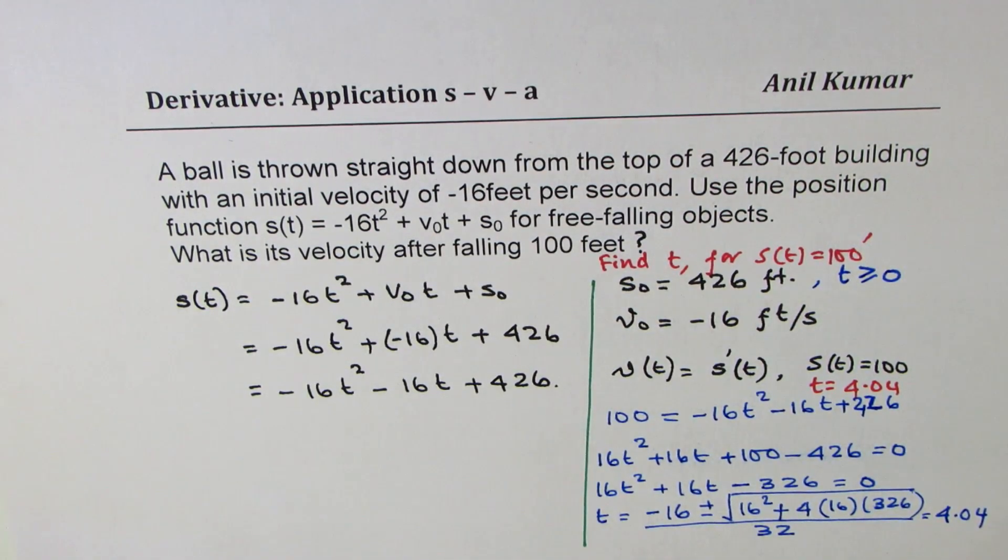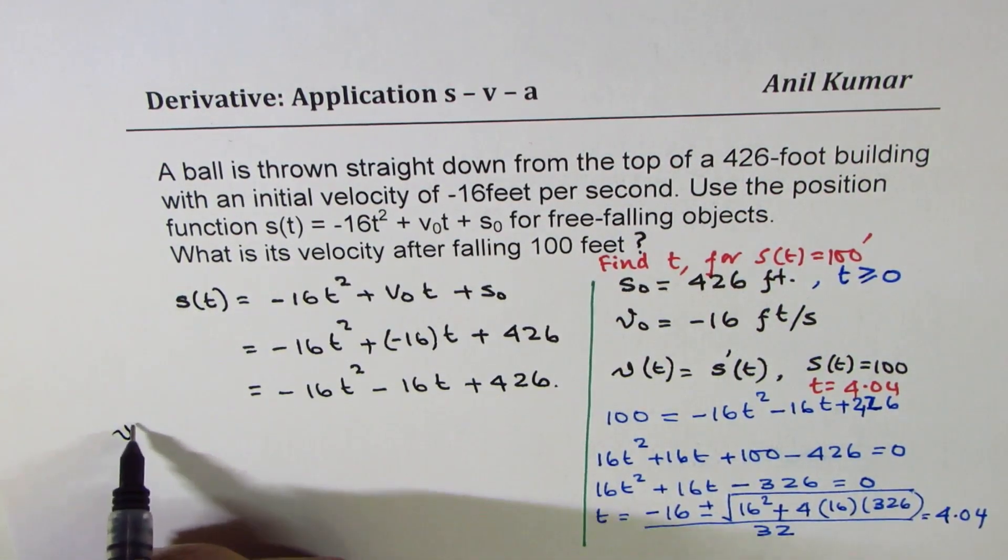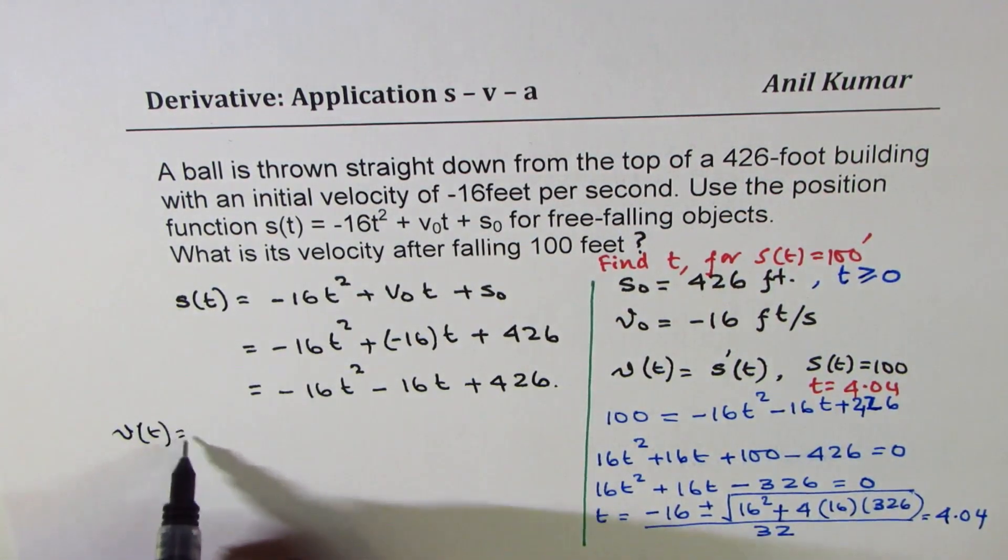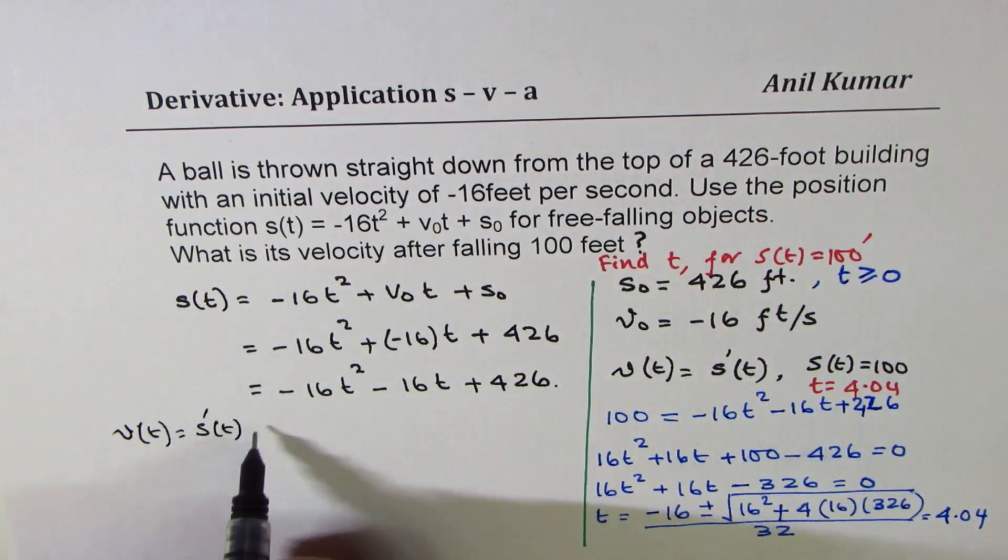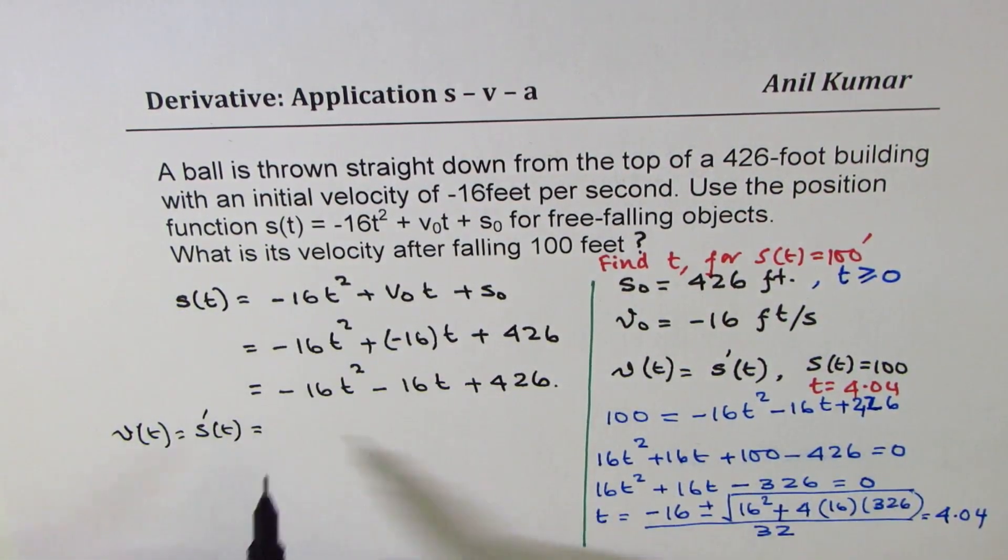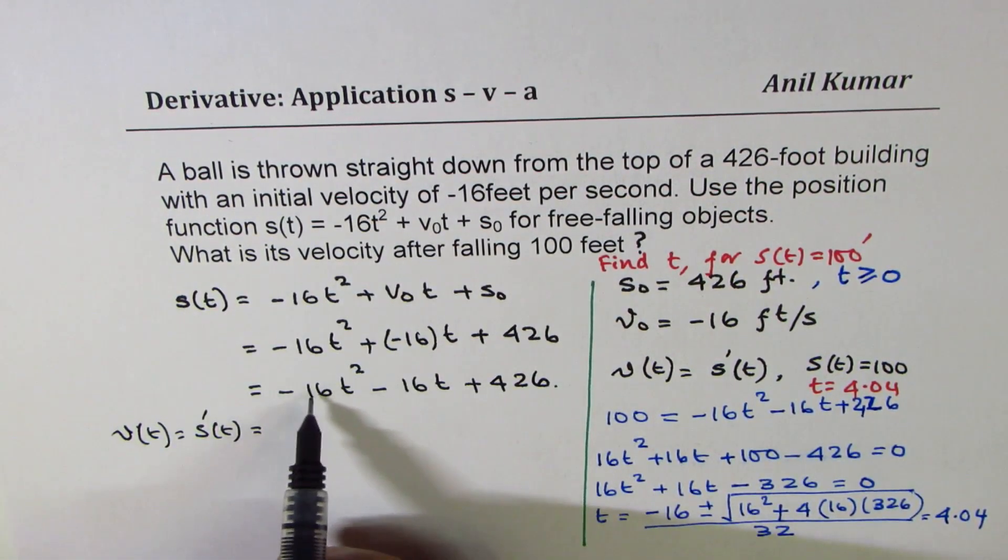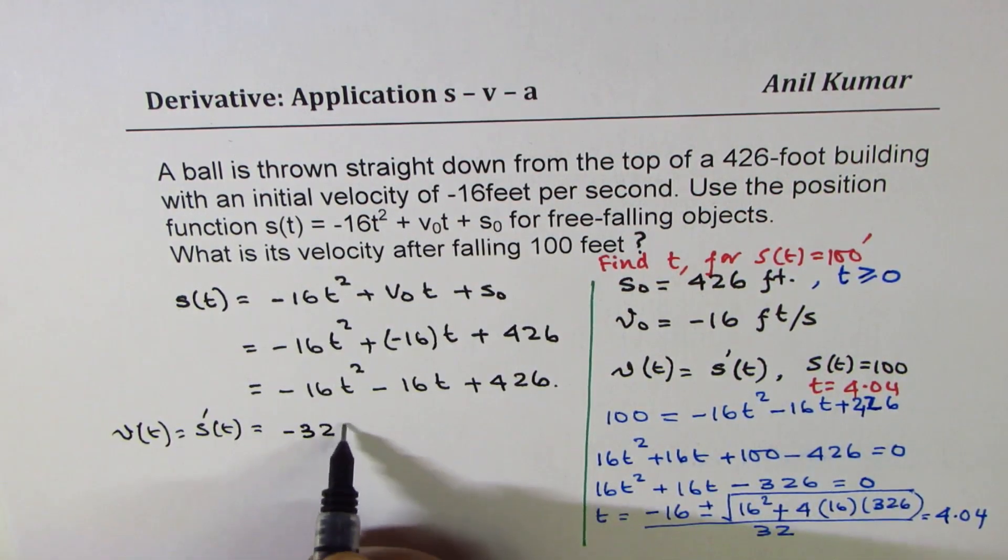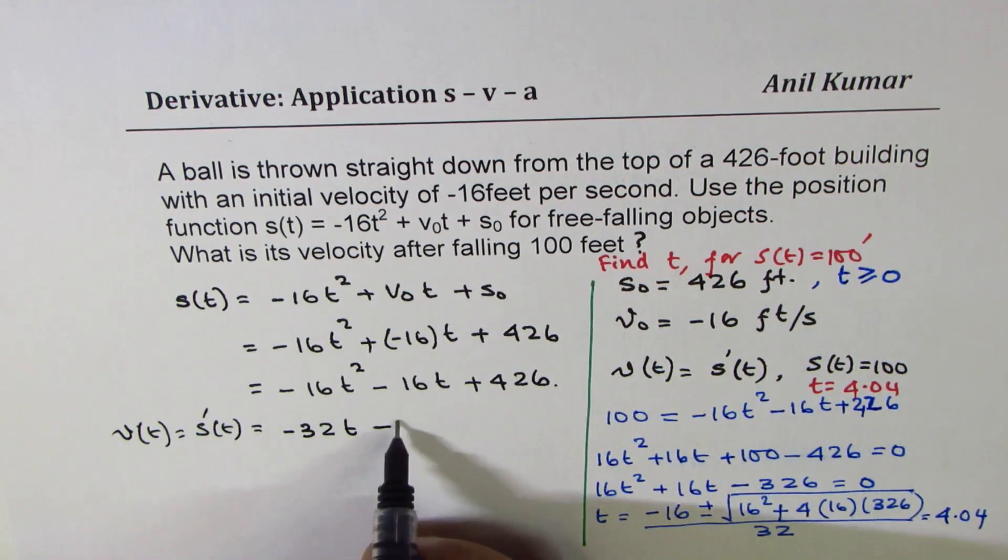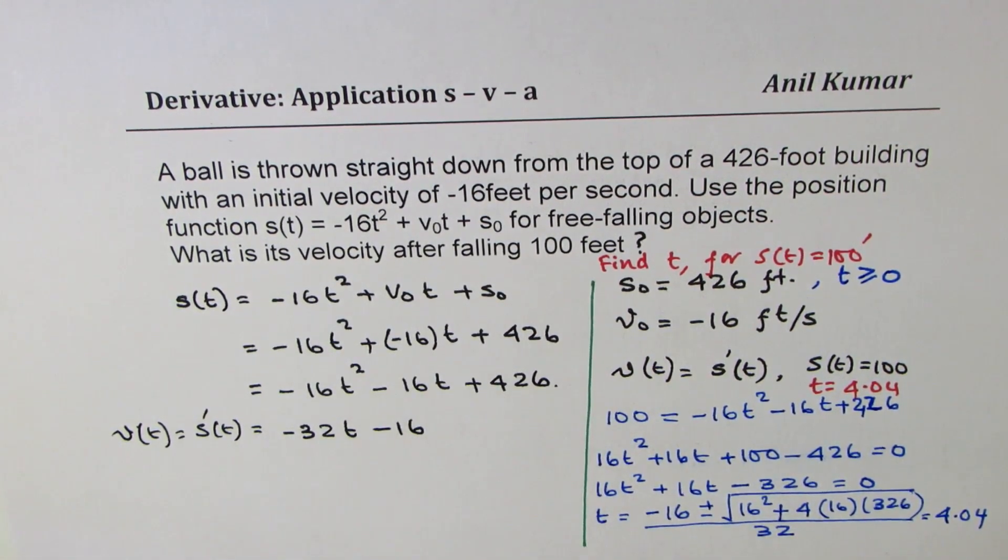Now, to find the velocity, we will find the derivative of s. So velocity at any time is derivative of this height function. So which is, we are using power rule. So 2 times -16 is -32. And this gives me -16. So that is the derivative.